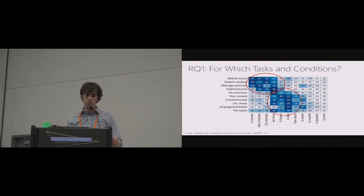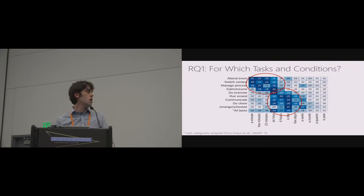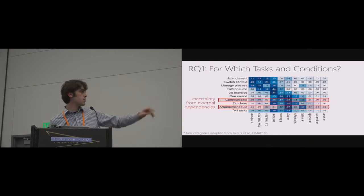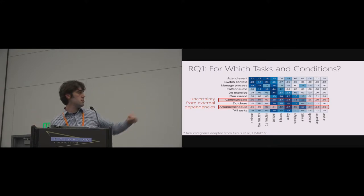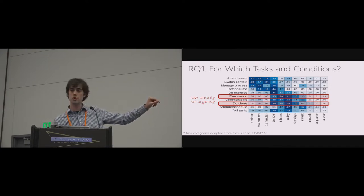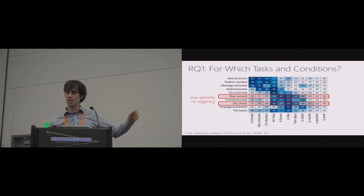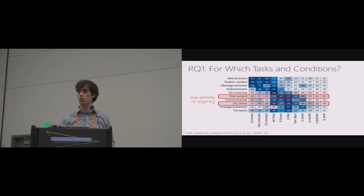On one end, tasks where people were comfortable providing reasonably precise estimates of when they'd complete them. On the other, tasks where people were much less willing to provide a precise estimate — like communicating, arranging or scheduling (where there are external dependencies), and running errands or doing chores (which fall under low priority/low urgency). The main takeaway from the survey is that there are very real, very common situations where people choose and prefer to use imprecise language.